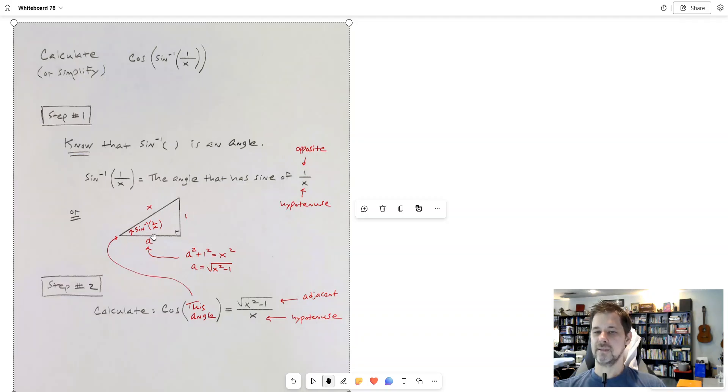And I happen to have drawn it as an angle in a right triangle because we can reduce the trigonometric functions to angles in right triangles. We can do that if we want to.